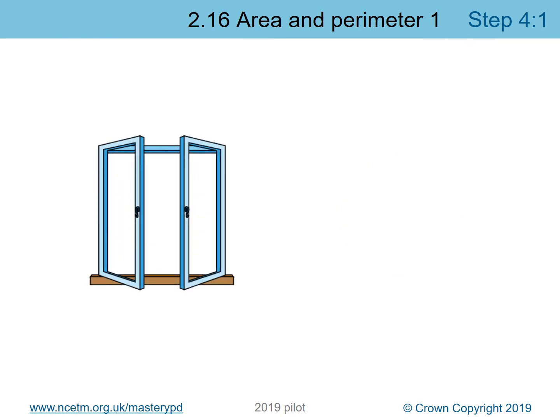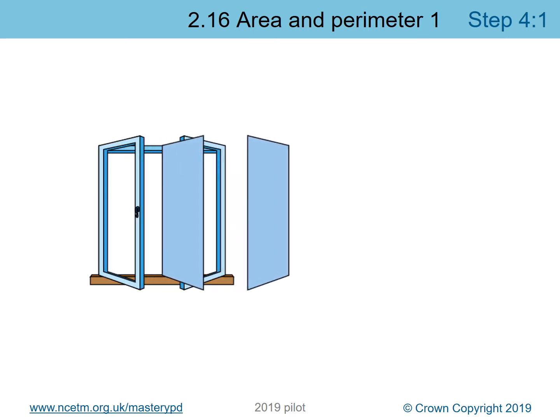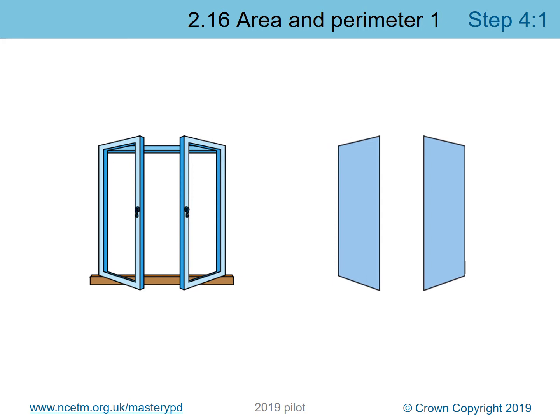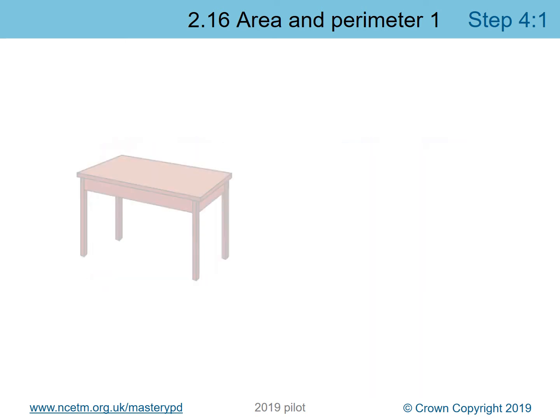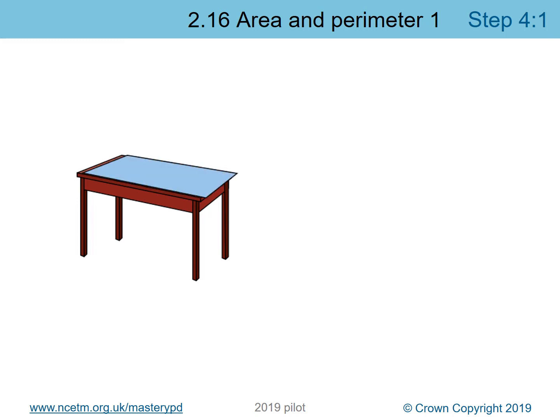Now we've got some windows. If I had a window, I might run my finger around the outside to find the perimeter, but I'm doing the area — so the area would be the flat section of the window pane inside the window frame. And here we have a table — you might be sitting at a table right now — and the area of the tabletop would be an area we could measure.